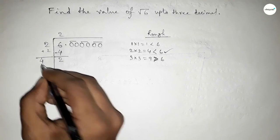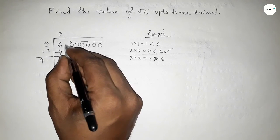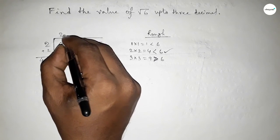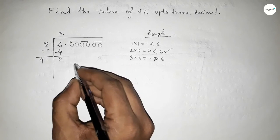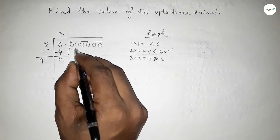Now we have to add here 2 since the last digit is 2, so we add here 2. Now this point will be here and this pair of zeros comes down.